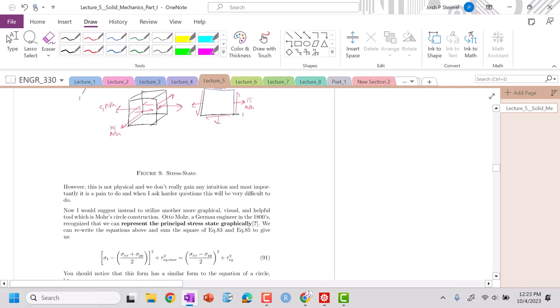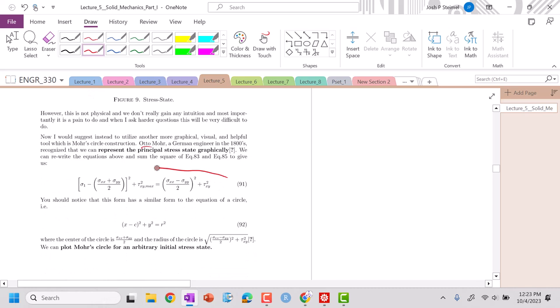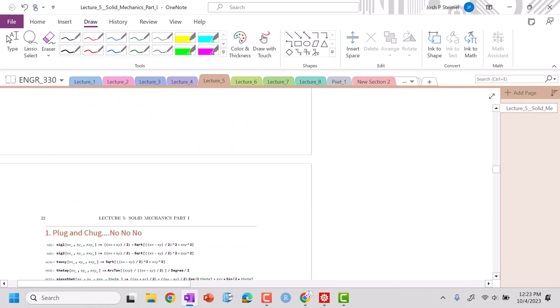This was realized by Otto Mohr. He was a German engineer, I think in the 1800s. Oh, excellent, I remembered it. So you can kind of see, you can rearrange these equations to have a similar form as a circle. You can actually visualize a plane stress state in 2D and look at normal stresses and shear stresses as circles.